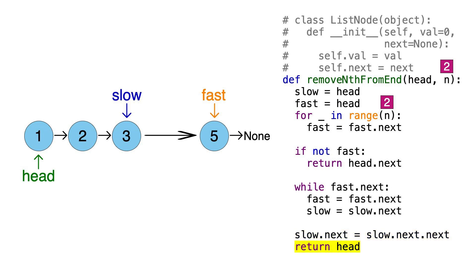So finally, we can now just return head, which still points to node 1, which then points to node 2, 3, then straight to 5, and we're done.